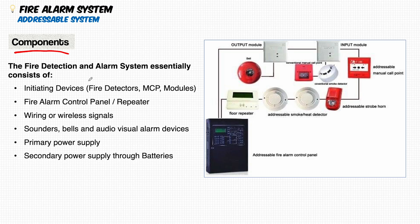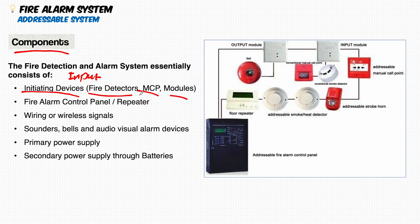Looking at the main components of the fire detection and alarm system: first are the initiating devices — the input of the system — including fire detectors such as heat, smoke, multi-sensor, CO detectors, and manual call points, as well as different types of modules. These provide the signal to the second component: the fire alarm controller.